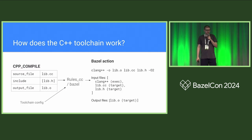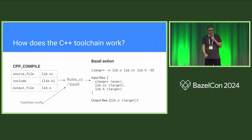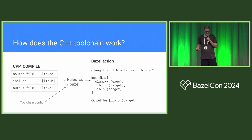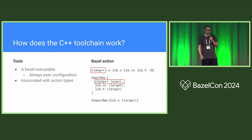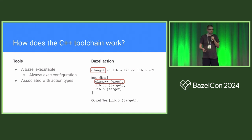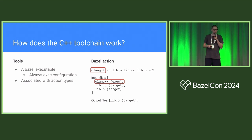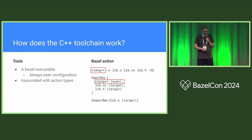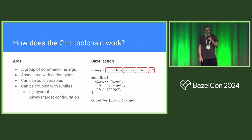So what we do here is we create a toolchain configuration, which is read by rule CC, and it outputs an action. An action is made up of three things: a command line, input files, and output files. Here are the bits relevant to C++ specifically. We have a tool — a tool is just a Bazel executable, always in the exec configuration, and it can be associated with specific action types. For example, your compilation actions would be handled by Clang, and your link actions might be handled by your linker.